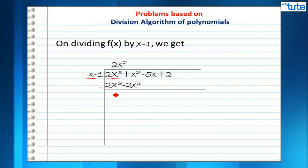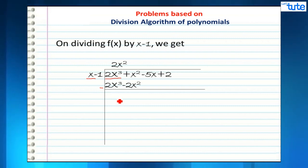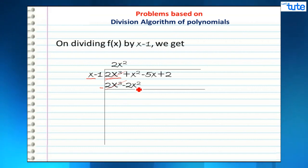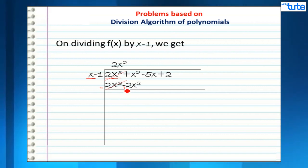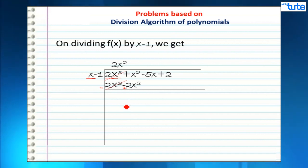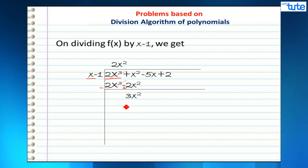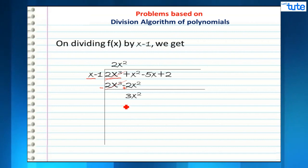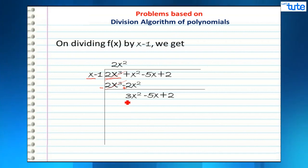Subtracting 2x³ - 2x² from our polynomial, 2x³ - 2x³ cancels to 0. The minus -2x² becomes +2x², so x² + 2x² gives us 3x². Bringing down -5x + 2, our new expression becomes 3x² - 5x + 2.